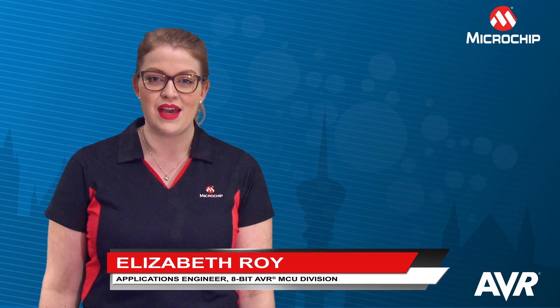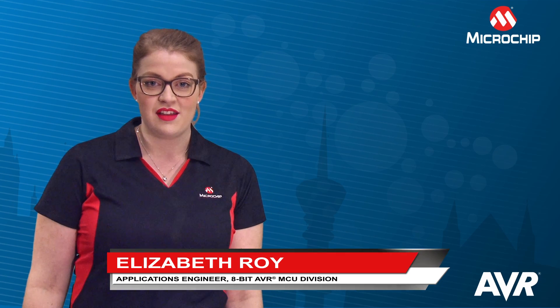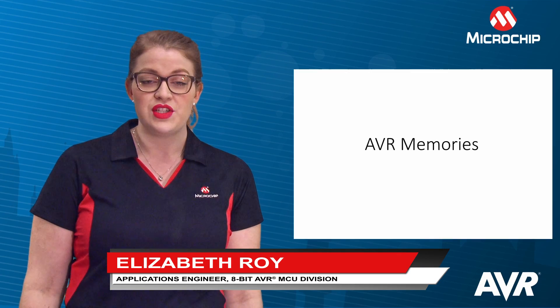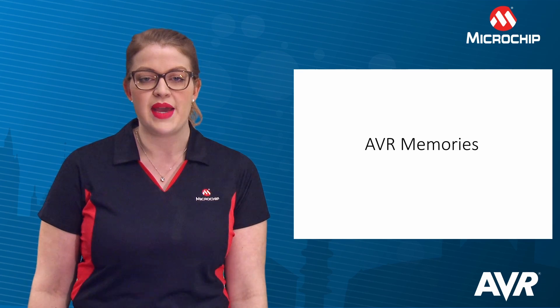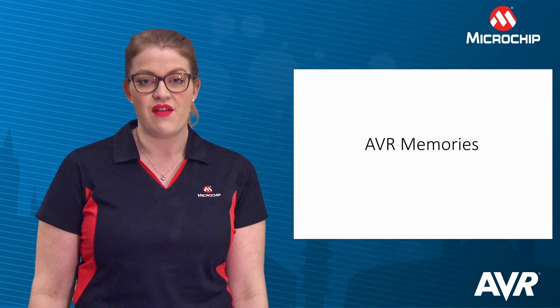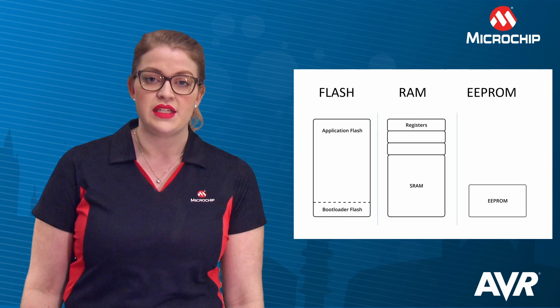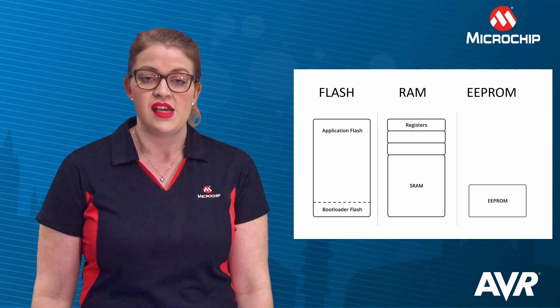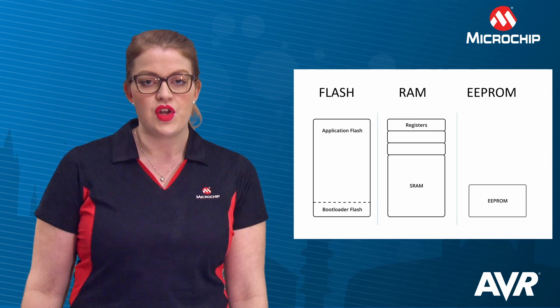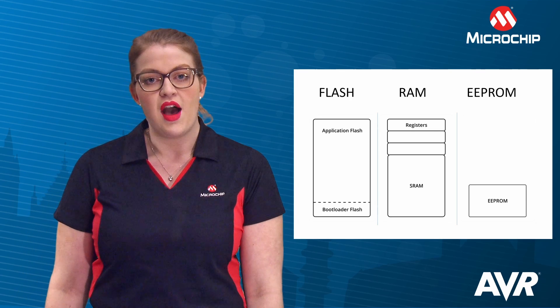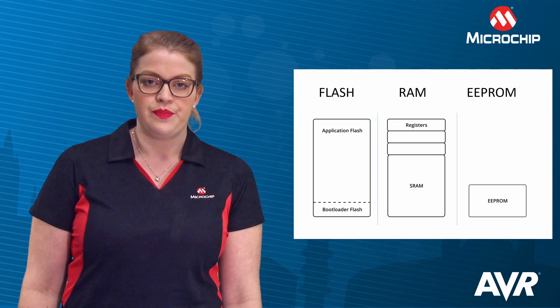Hi, in this video I'll talk about the different AVR memories. There is an example project linked in the description box which showcases some of the topics I will cover. The first thing to know is that the AVR devices are based on a modified Harvard architecture. This means that the internal non-volatile flash memory is in a different address space than the internal SRAM, IO registers, and integrated EEPROM.